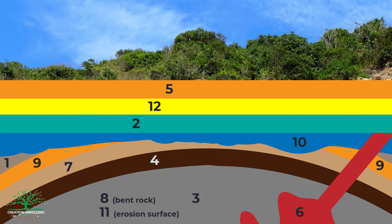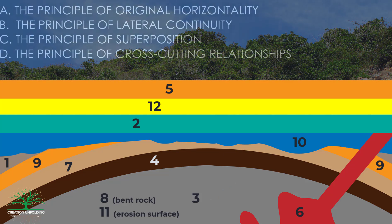If you had number 3 down first, then great job. This is the first geologic event and accords with principle C. However, you'll notice that this layer is bent. Yet according to principle A, this layer was originally horizontal, which means that at some later time it was deformed into its present shape. The next geologic event was the deposition of number 4, followed by numbers 7, 9, and 1. You'll notice that layers 7, 9, and 1 look as though they've been eroded down and cut through.